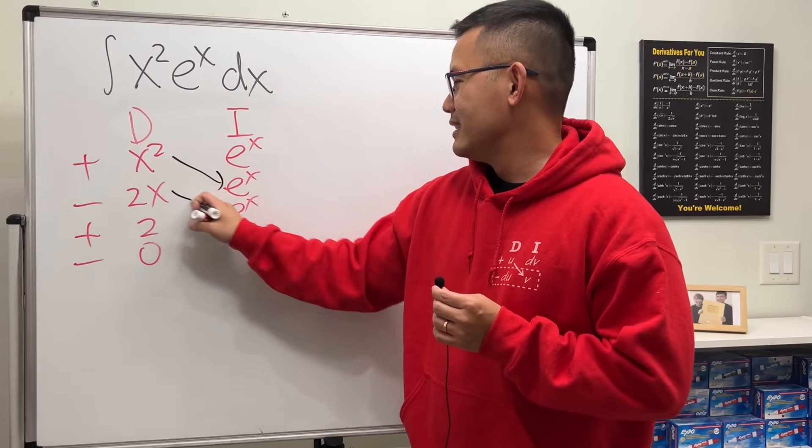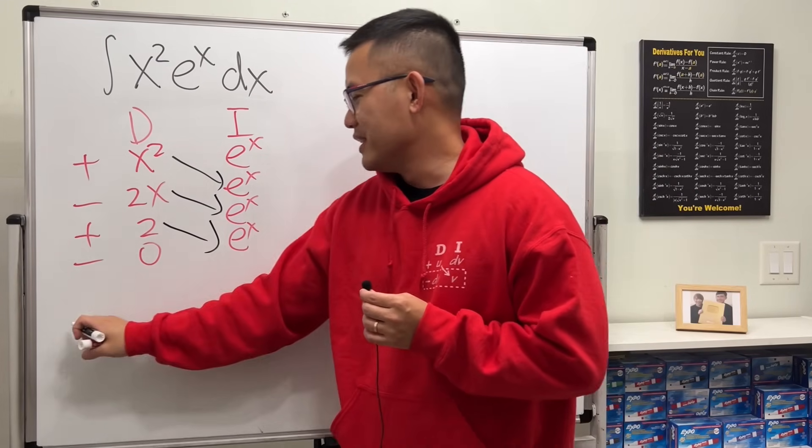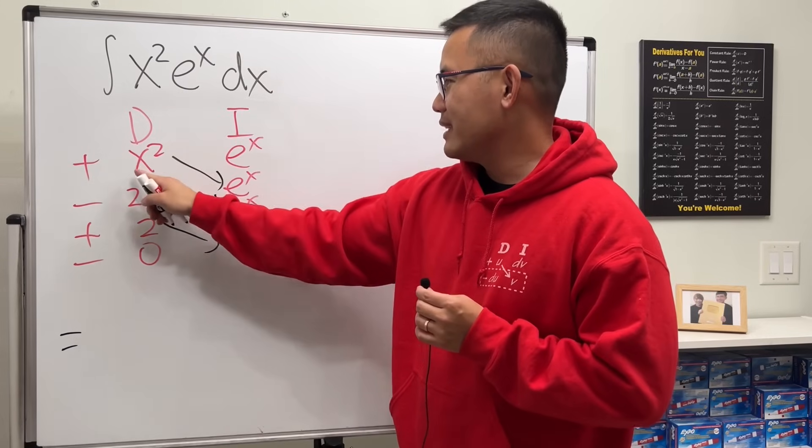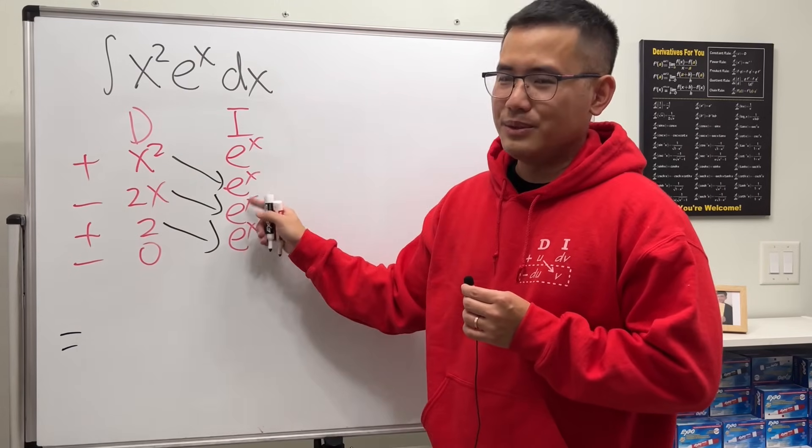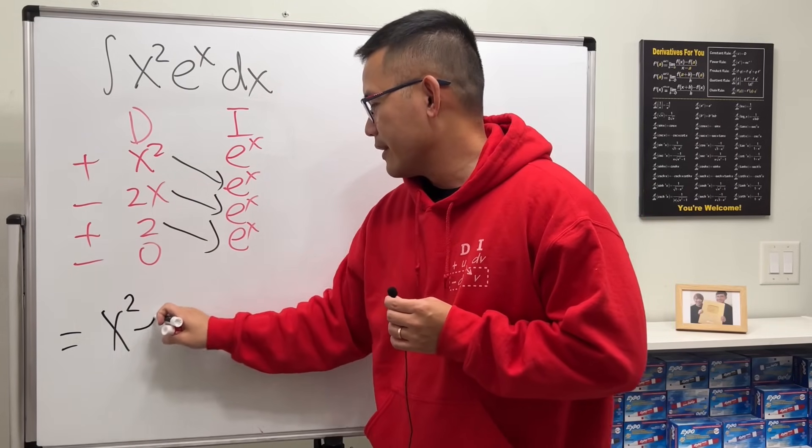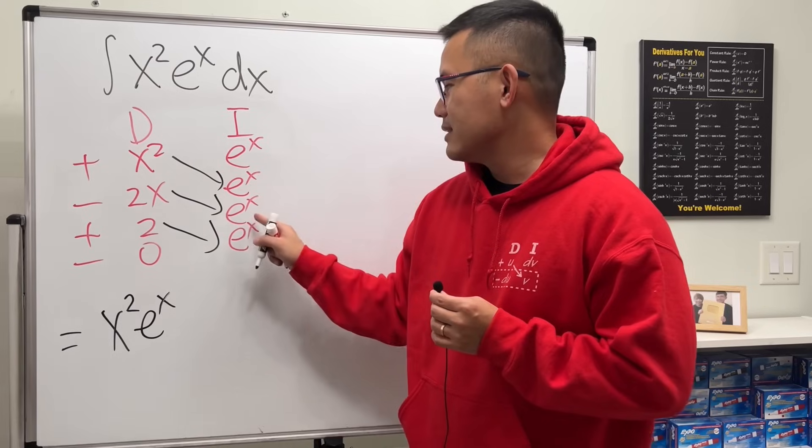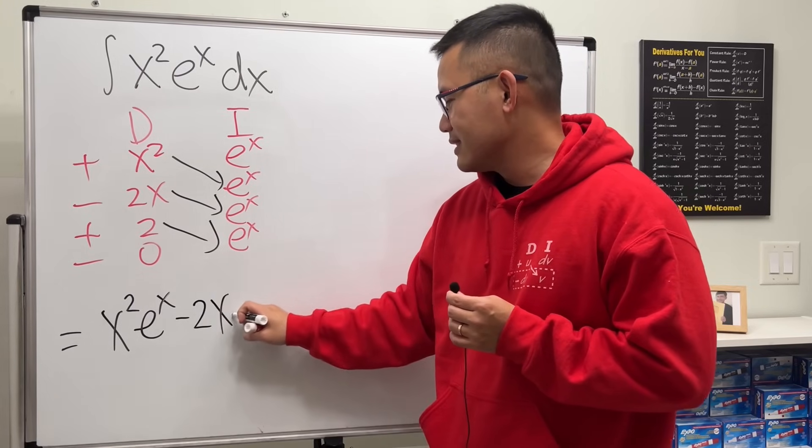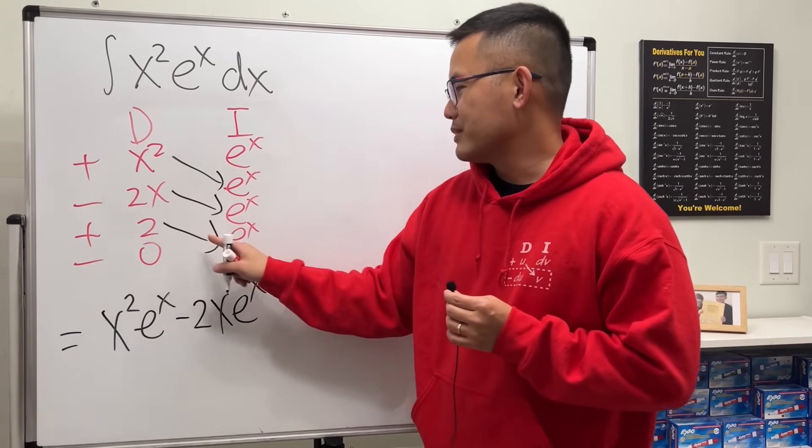And do this, this, and that—that will pretty much give you the answer. So first we get positive x squared times e to the x, and then minus 2x times e to the x, and lastly plus 2 times e to the x. And we are done after the plus C.